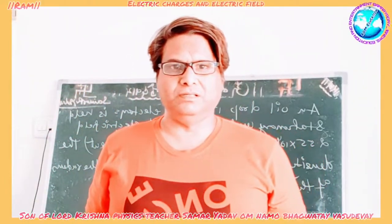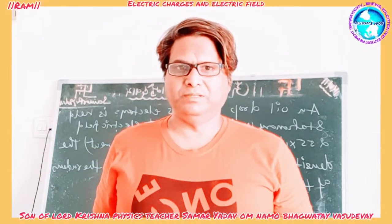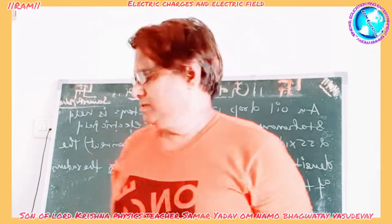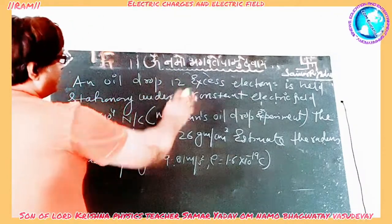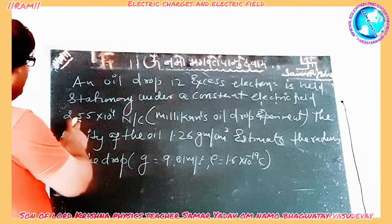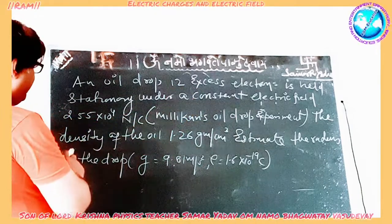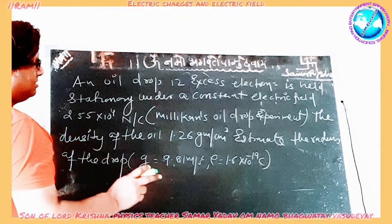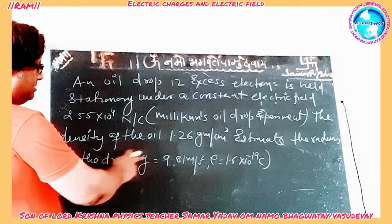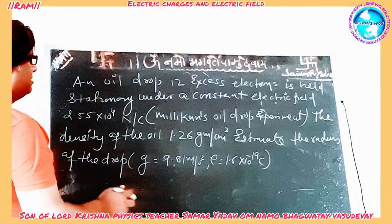Today in physics, electric charges and electric field. We will solve one numerical based on the Millikan oil drop experiment. An oil drop with 12 excess electrons is held stationary under a constant electric field of 2.55 into 10 to the power 4 Newton per Coulomb. The density of oil is 1.26 gram per centimeter cube. Estimate the radius of the drop. G is equal to 9.81 meter per second square, and e is equal to 1.6 into 10 to the power minus 19 Coulomb.